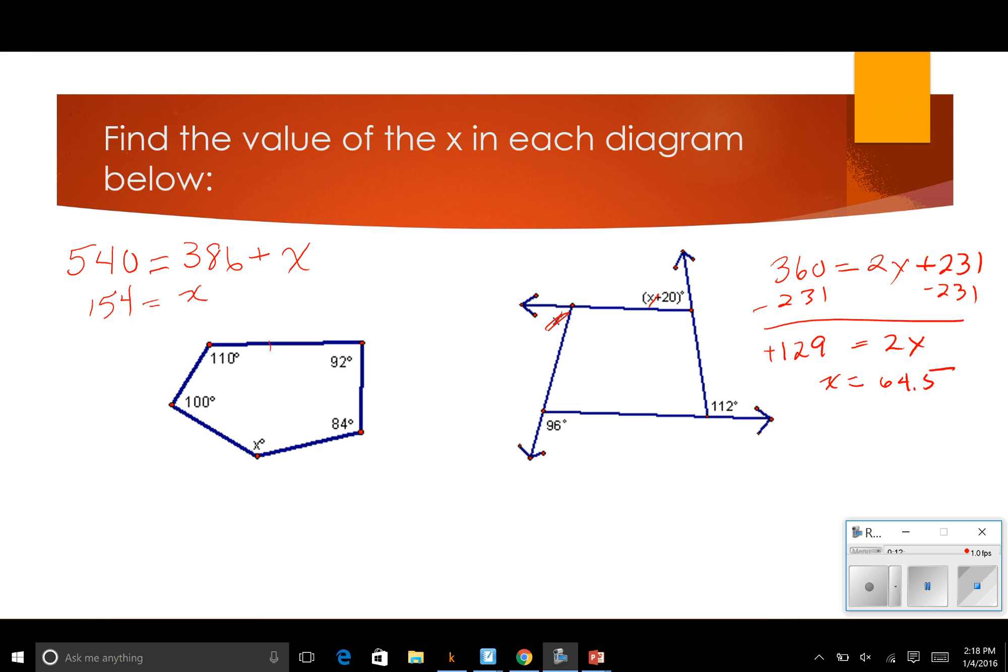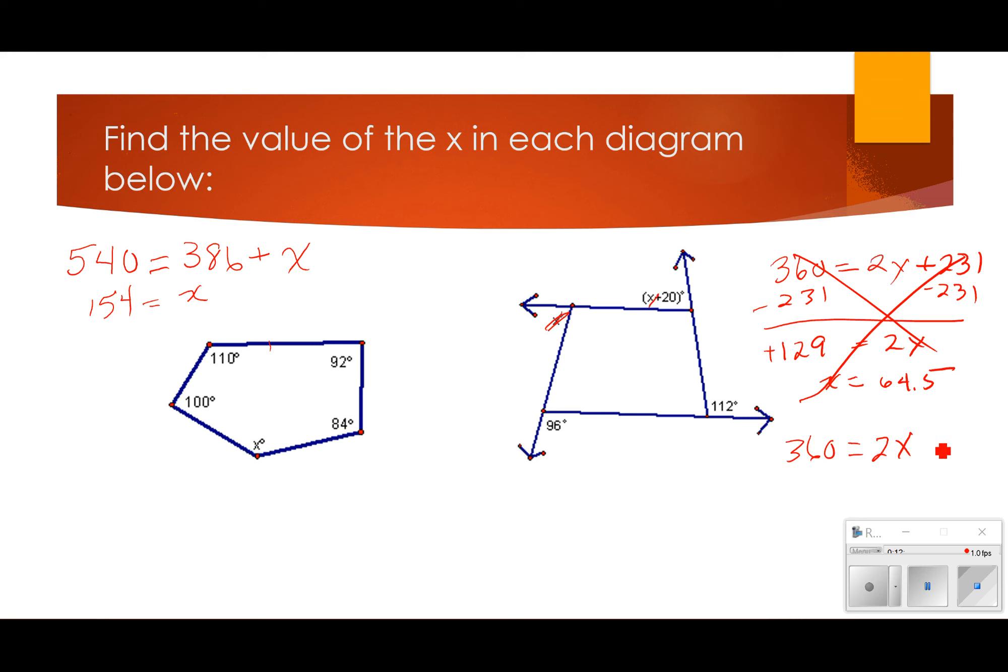So, I caught myself before you guys did. All right. When I add up those numbers, it's actually equal to 228. So, when I go to solve that two-step equation now, I'm going to get 132 equals 2x. And when I divide by 2, I'm going to get 66. So, x is 66.